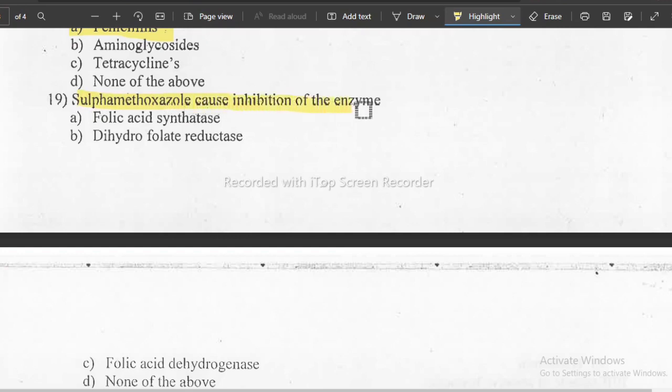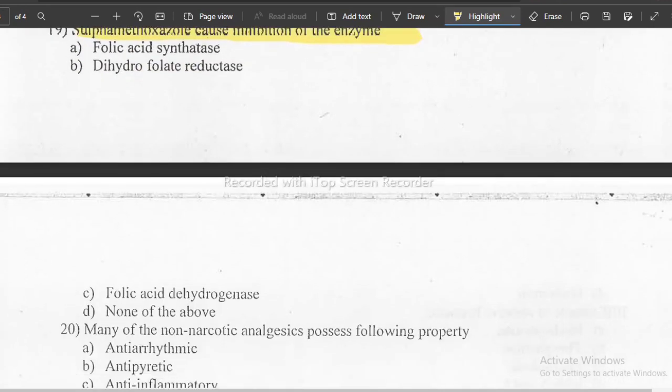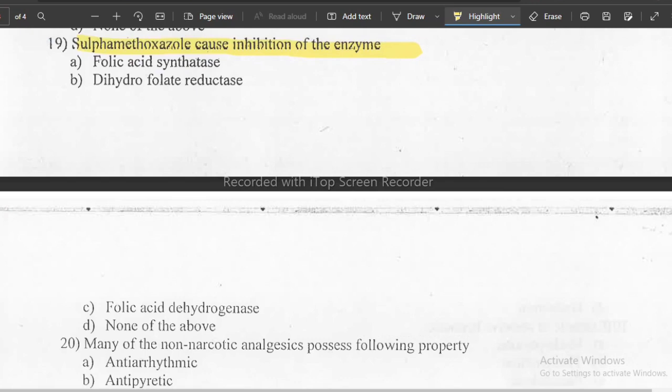Question 19: sulfamethoxazole causes inhibition of which enzyme? You will get the answer where synthesis is happening. The options are folic acid synthesis, dihydrofolate reductase, folic acid dehydrogenase, and none of the above. The answer is dihydropteroate synthesis. That is not in the options, so the correct answer is D, none of the above.